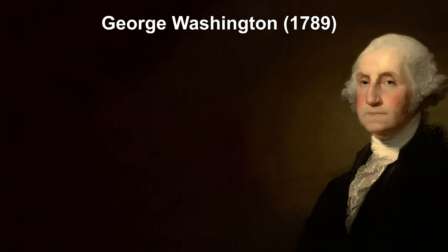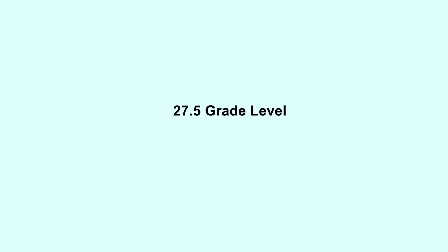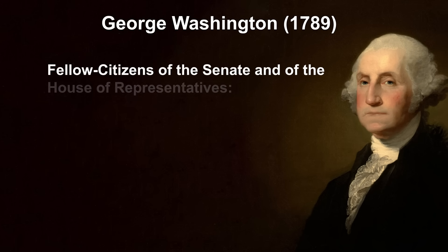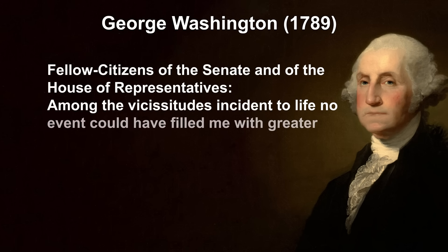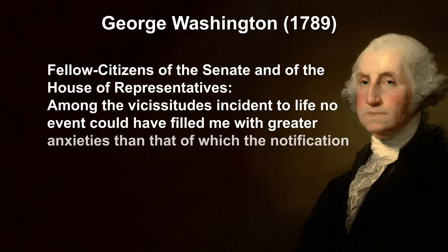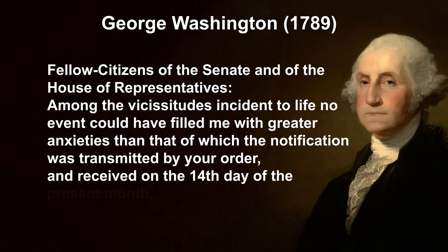George Washington's first inaugural speech in 1789 has the highest reading level of any speech — scored at the 27th grade reading level. The formula isn't really designed for older speaking. Here is the first sentence of that speech: 'Fellow citizens of the Senate and of the House of Representatives, among the vicissitudes incident to life, no event could have filled me with greater anxieties than that of which the notification was transmitted by your order and received on the 14th day of the present month.' People spoke differently back then.